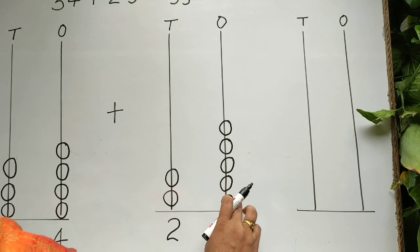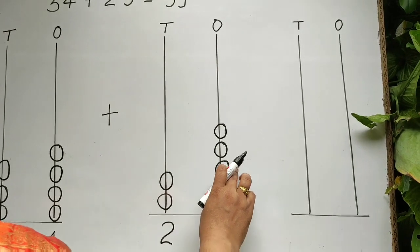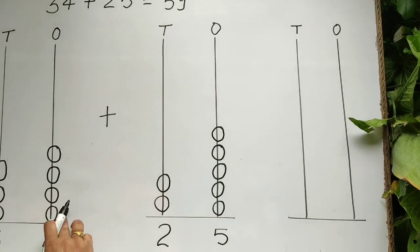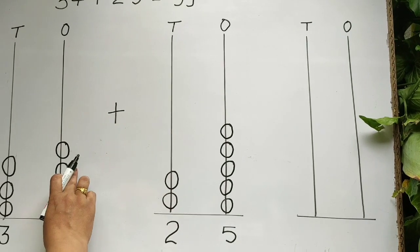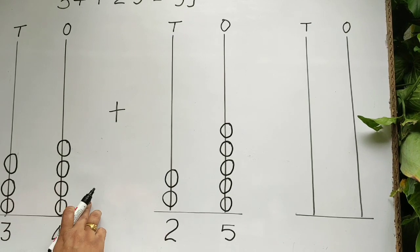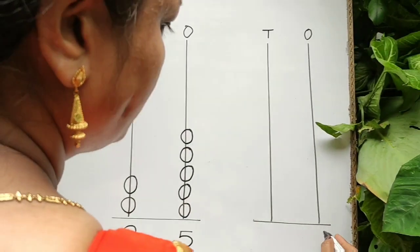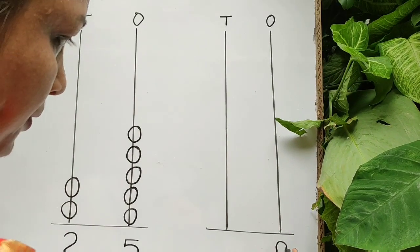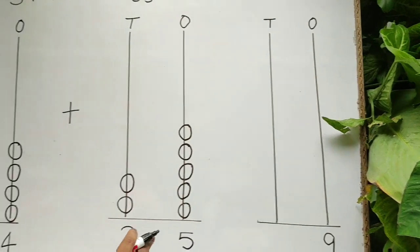Let's count the ones rod beads: one, two, three, four, five, six, seven, eight, nine. These are 9 beads. So write down 9 under ones.